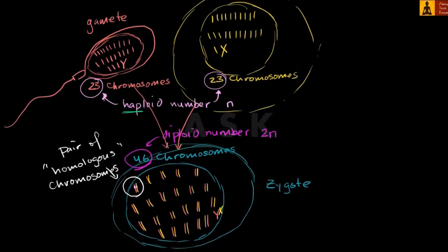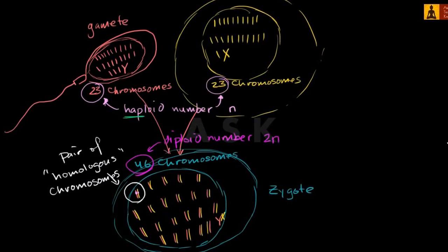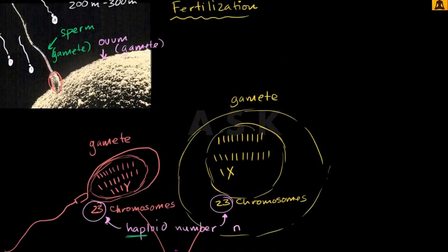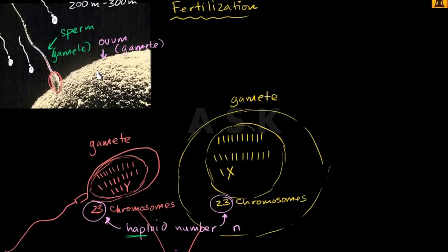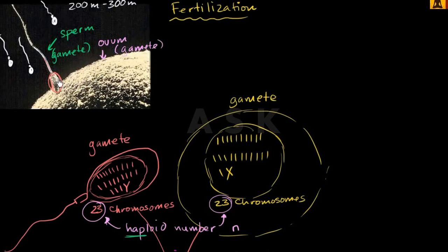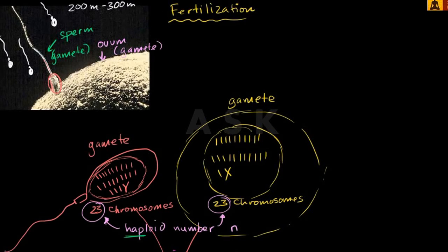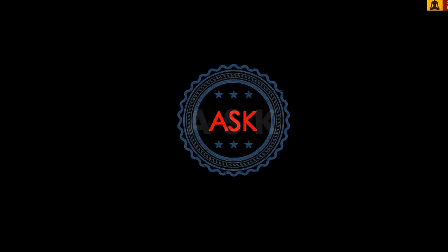So hopefully this gets you familiar with some of the vocabulary around fertilization, haploid, diploid, zygotes, and gametes. And it also makes you feel a little bit better about yourself — just to exist, half of your chromosomes had to win an incredibly competitive race. Thank you for watching this video. Don't forget to like the video.